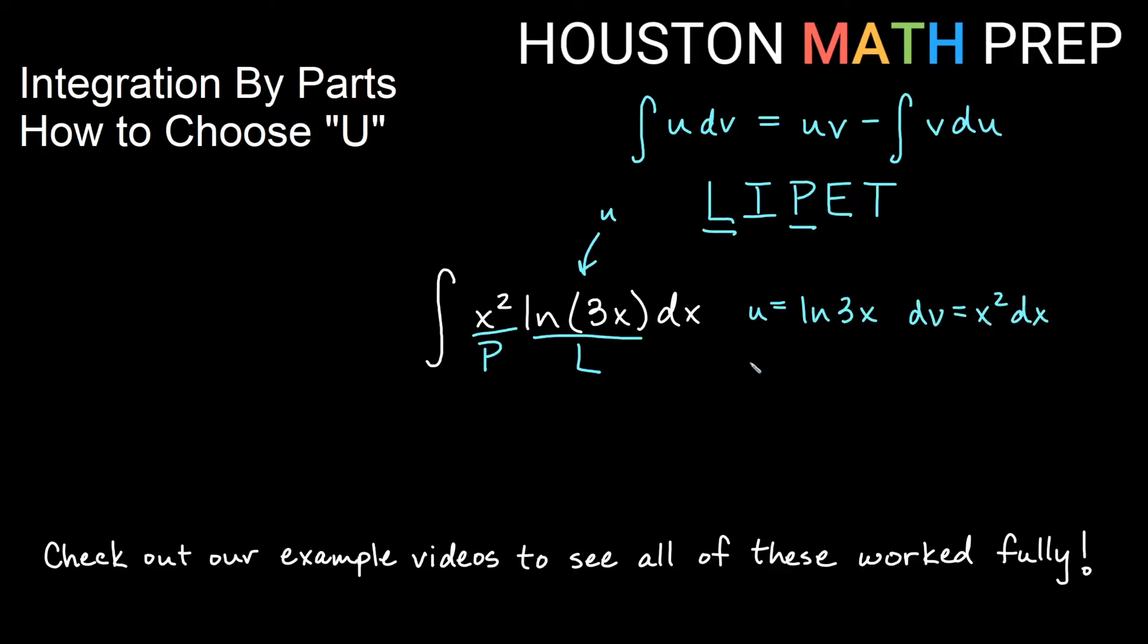In this one, the derivative of U du is going to equal 1 over 3x times the derivative of the inside 3 dx. So we would go ahead and say that du is actually going to be 1 over x dx once we reduce. And then here the antiderivative of dv would be 1 third x cubed.